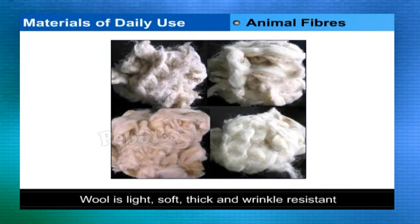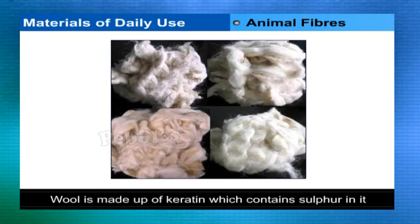Wool is light, soft, thick, and wrinkle resistant. It is made up of keratin, which contains sulfur in it. Types of wool: sheep wool — the world's finest wool comes from the fleece of merino sheep. Fleece is a thick coat of hair on the body.